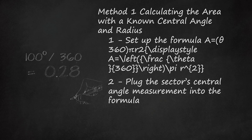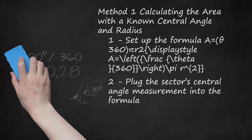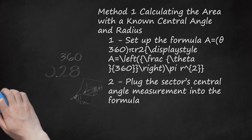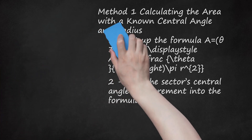The area of the sector is about 28% of the area of the whole circle. If you don't know the measurement of the central angle, but you know what fraction of the circle the sector is, determine the measurement of the angle by multiplying that fraction by 360. For example, if you know the sector is 1/4 of the circle, multiply 360 by 1/4, which is 0.25, to get 90 degrees.